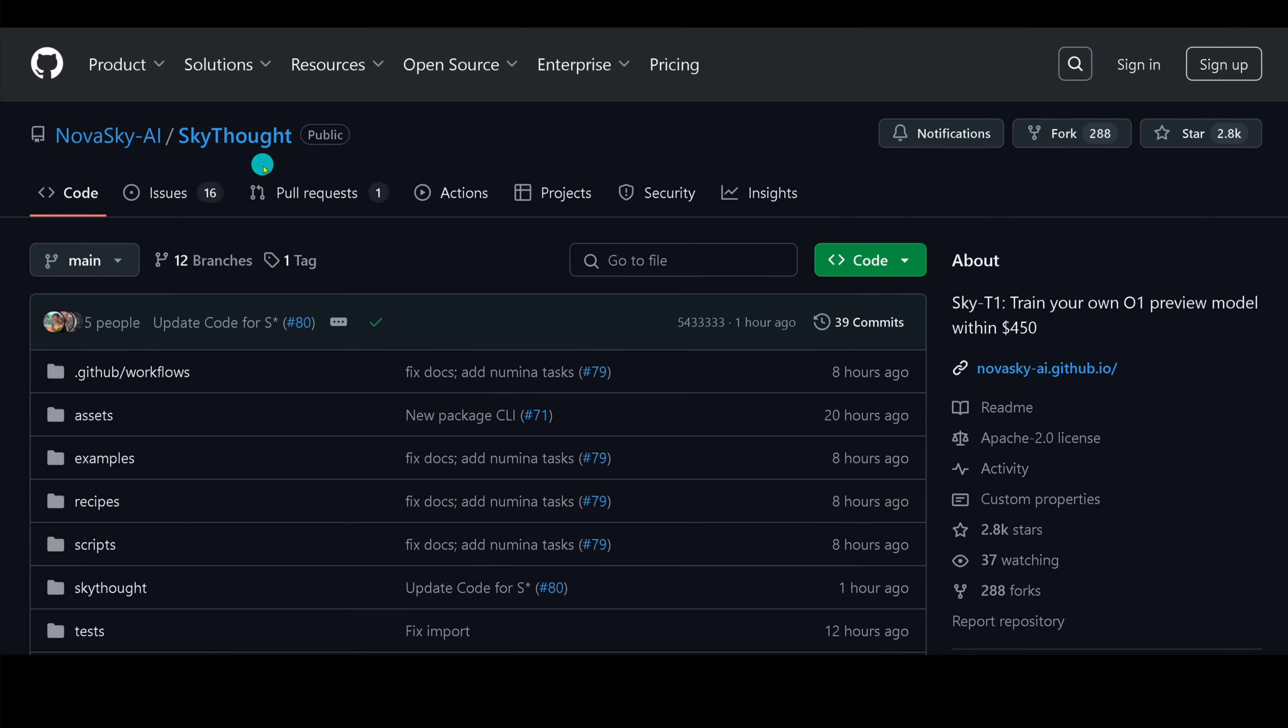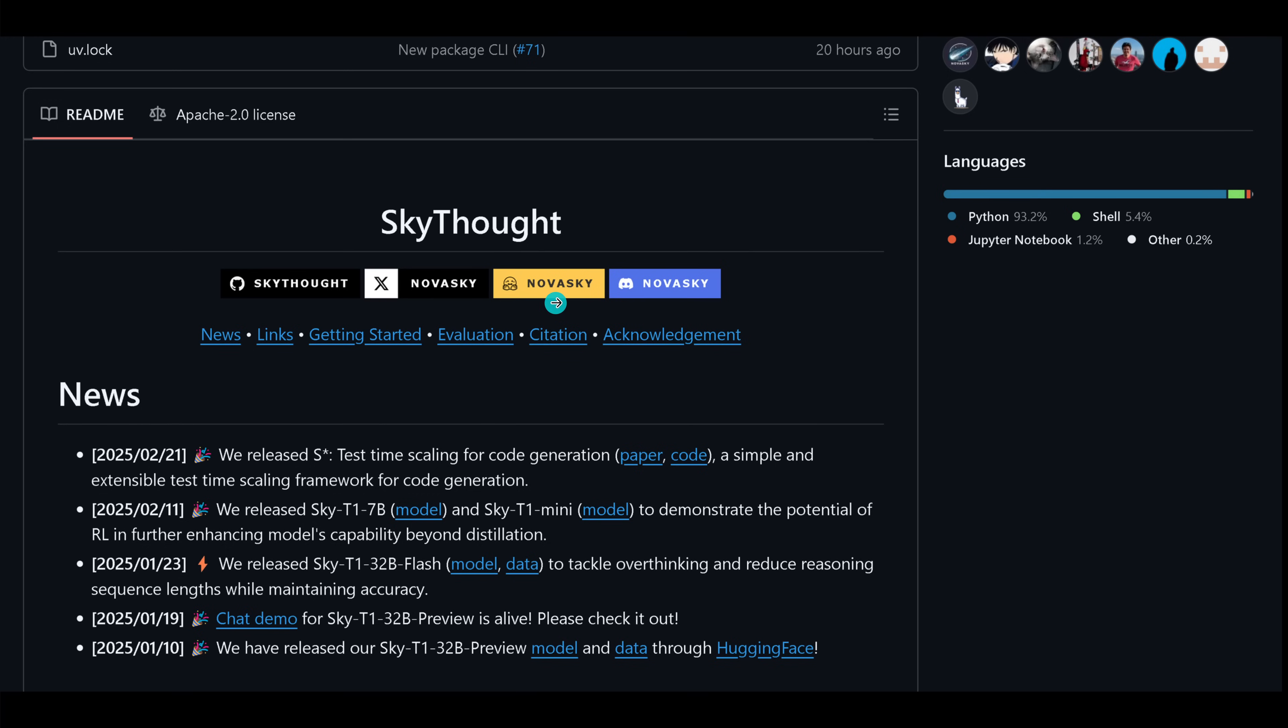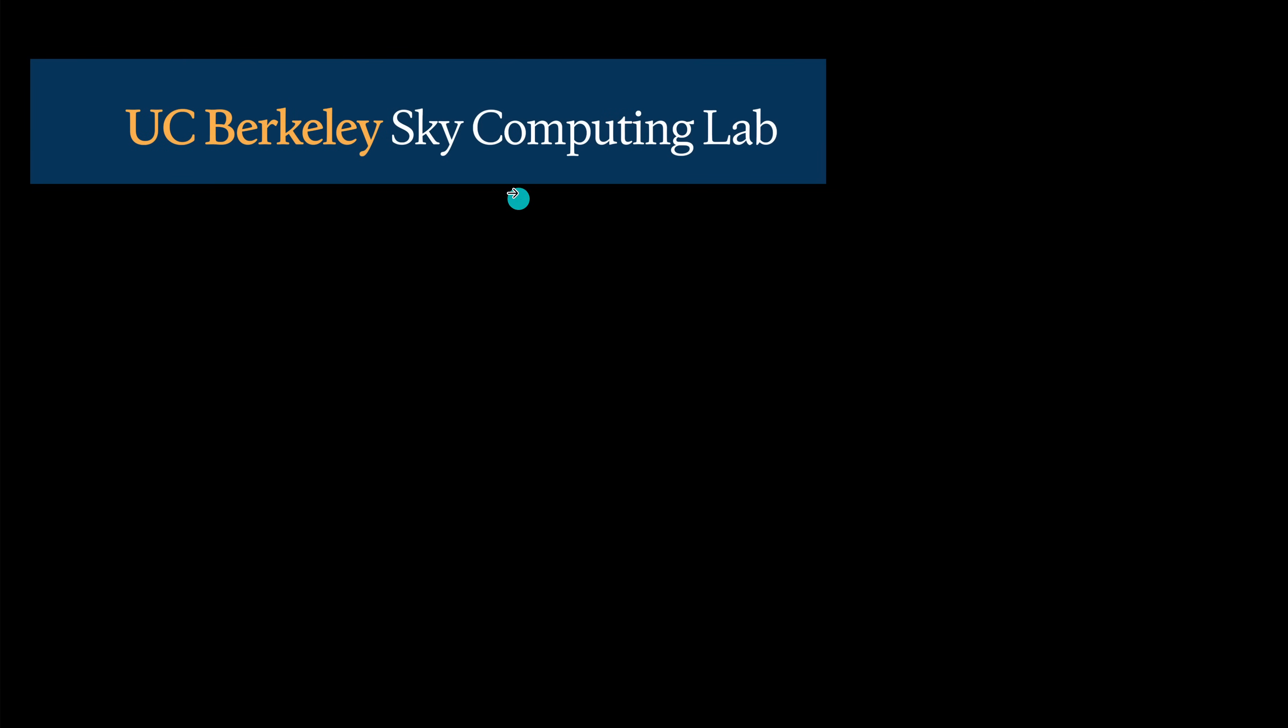We do have a GitHub page: nova-sky-sky-sort. Remember this is the same team from UC Berkeley that gave us Sky T1, similar to the O1 model. Here you have the GitHub IO. I'm really early because just one hour ago Sky Sort updated the code for the S-Star approach. You have everything available. Here you have the beautiful release S-Star, February 21st 2025. Code, paper, simple extendable test time scaling framework for code generation. It works with quite a lot of models. I would be surprised if you find a model where it's not working at all. Your Python notebook, Jupyter notebook, everything is there.